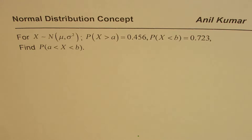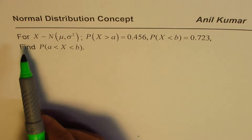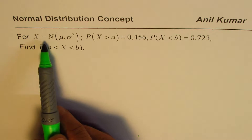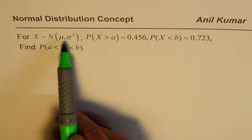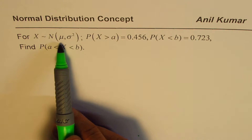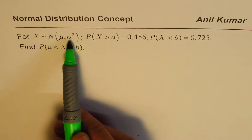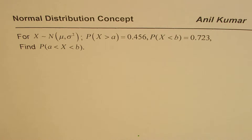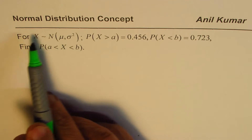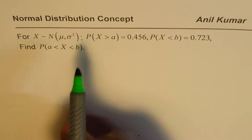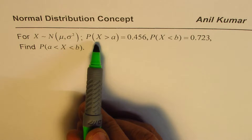I'm Anil Kumar and in a couple of my videos I'll discuss how to use normal distribution concepts to find the solution of many questions. In this question, for a random variable X which follows a normal distribution — written in terms of mean and variance, where variance is the square of standard deviation — we are given information about two probabilities.